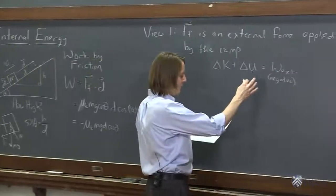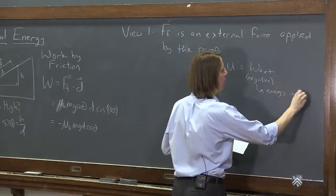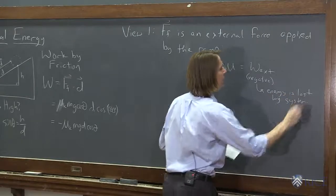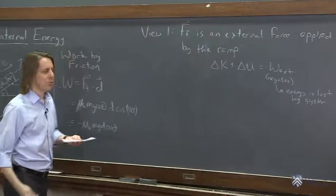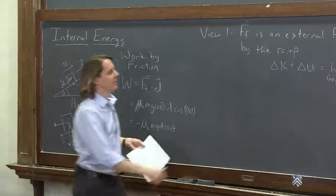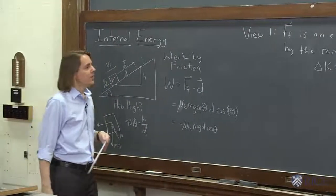Which is what we saw. We know when you do it with forces, it doesn't get as high if you include friction. So we didn't gain as much gravitational potential energy. So that's one way to look at it.